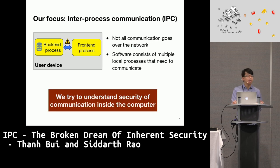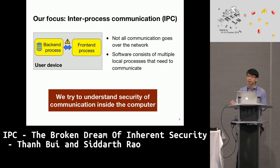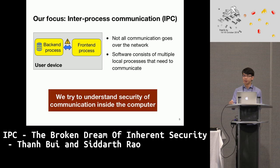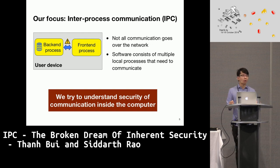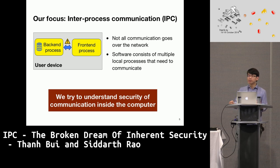However, in reality not all communication goes over the network. Certain communications happen within the computer. For example, software often comprises a front end that provides the GUI and a back end that manages the data. These are separate processes, and they use a mechanism called inter-process communication, or IPC, to exchange data. These communications stay within the computer and never leave it.